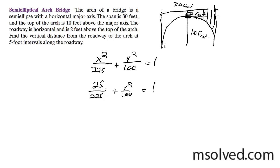So I get 25 divided by 225, so 0.111. So y squared over 100 is equal to 0.888.